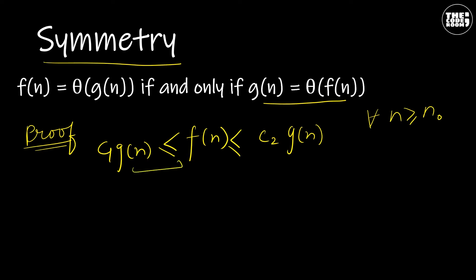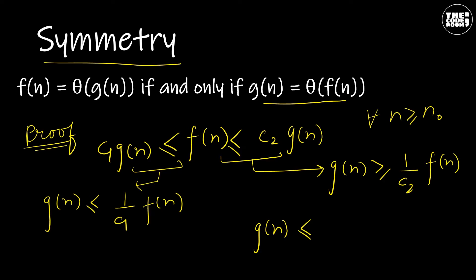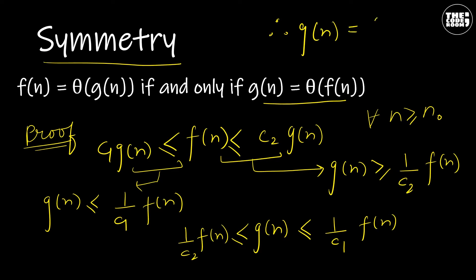We can also write this as g(n) is less than or equal to (1/c1)·f(n), and from this we can write g(n) is greater than or equal to (1/c2)·f(n). Therefore, it is proved that g(n) is the Theta of f(n).